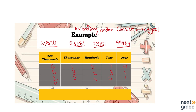When we compare numbers, we look at the biggest place value, which in this case is the ten-thousands place. Looking at the ten-thousands digits, we have 6, 5, 2, and 9. Which one of these is the smallest?